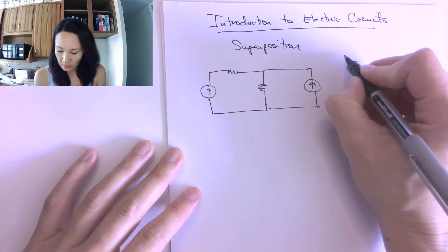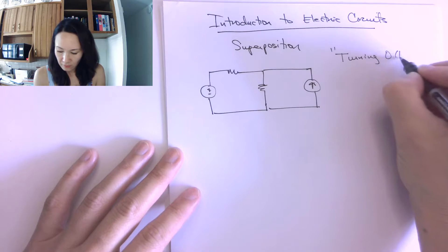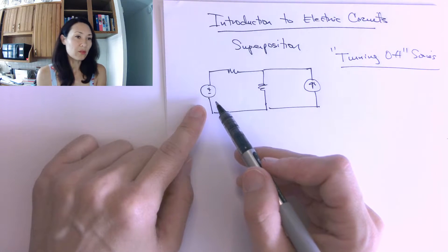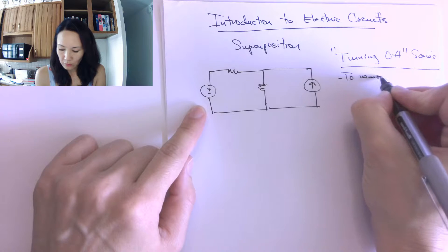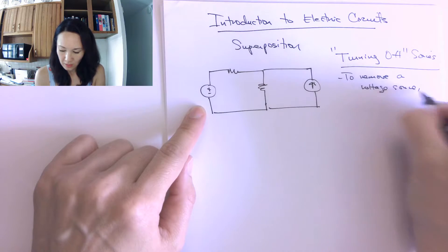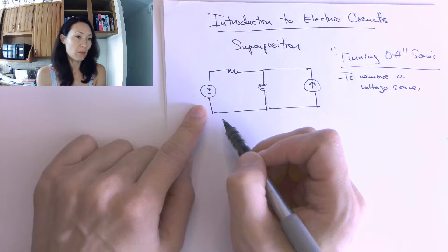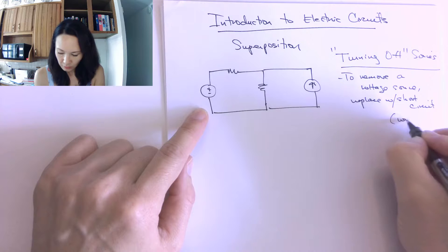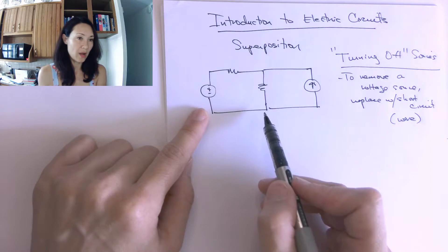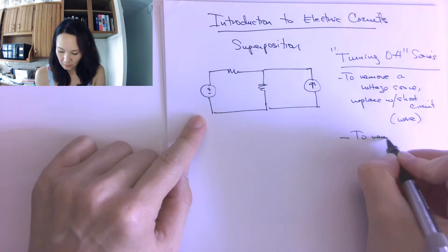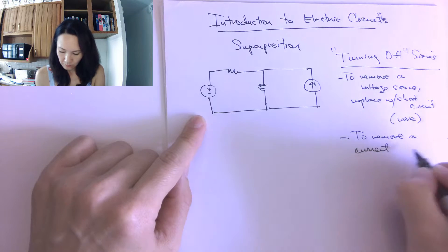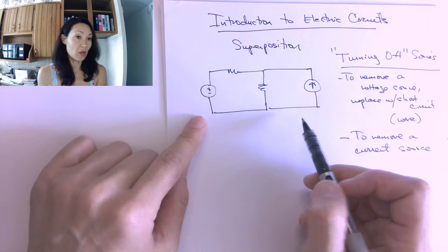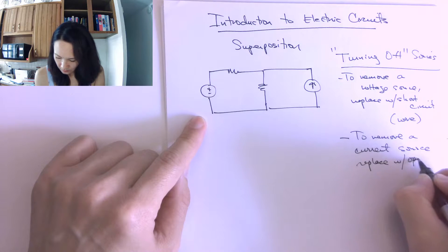Some rules for turning off sources. If we want to turn off a voltage source, the way we remove it from a circuit — to remove a voltage source, we're going to replace it with a wire, basically a short circuit. To remove a current source, we're going to replace it with an open circuit — basically an open wire.